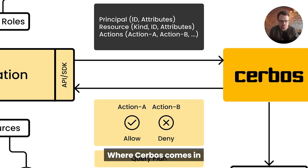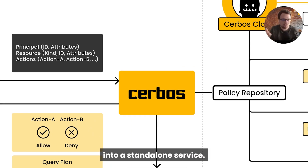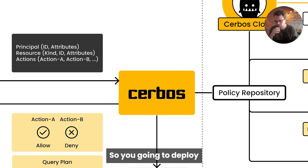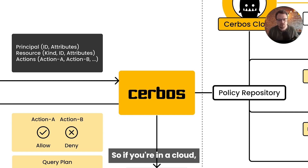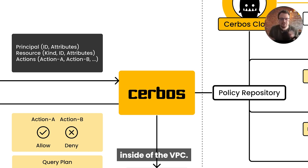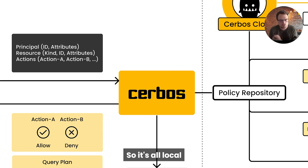Where Cerbos comes in is you extract all that business logic out into a standalone service. So you would go and deploy a Cerbos instance inside of your environment, inside of your architecture. So if you're in a cloud, this would be running inside your VPC. If you're in Kubernetes, it'd be running inside of your cluster. So it's all local to your application.